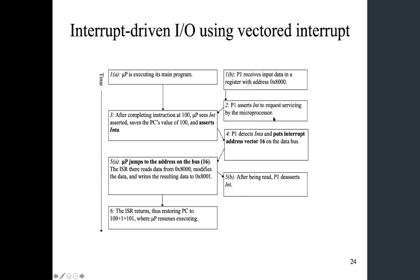The next few slides are similar, capturing the process of the interrupt. However, the difference from the previous case is that we now use vectored interrupt instead of fixed interrupt. So 16 was the only number possible in the fixed case, and the peripheral doesn't need to provide such a value to the microprocessor. In this case, using vectored interrupt, you can see the major difference in step four where P1 not only asserts the interrupt signal, it will put an interrupt address vector on the data bus. The value 16 could be other values — the peripheral has to put such an address on the data bus to tell the microprocessor where to find the ISR.